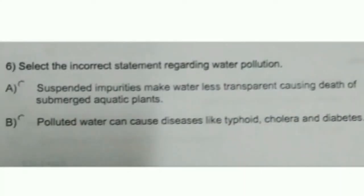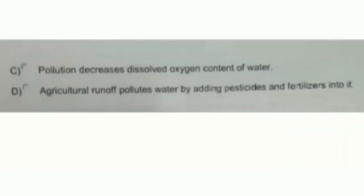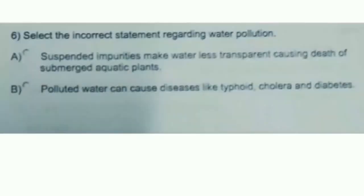Select the incorrect statement regarding water pollution. A. Suspended impurities make water less transparent causing death of submerged aquatic plants. B. Polluted water can cause diseases like typhoid, cholera, and dysentery. C. Pollution decreases dissolved oxygen content of water. D. Diabetes, because diabetes is not a waterborne disease — so D is the incorrect statement.